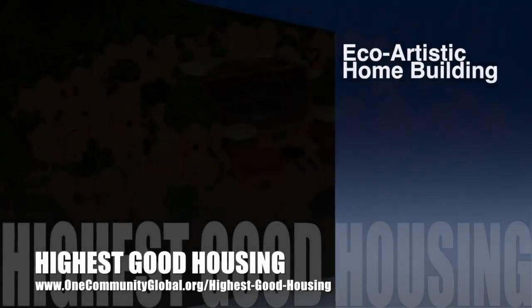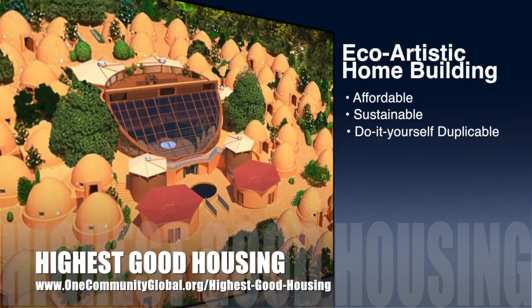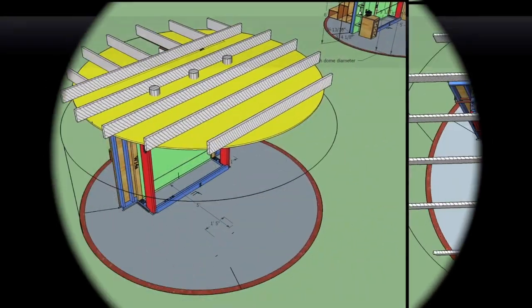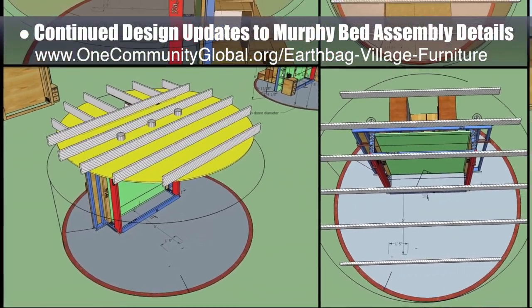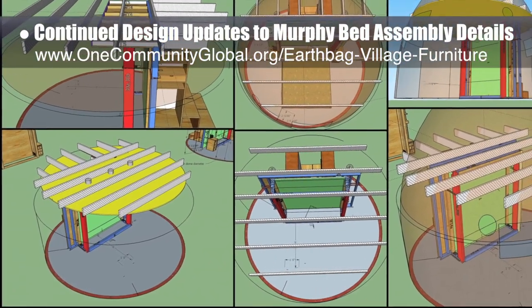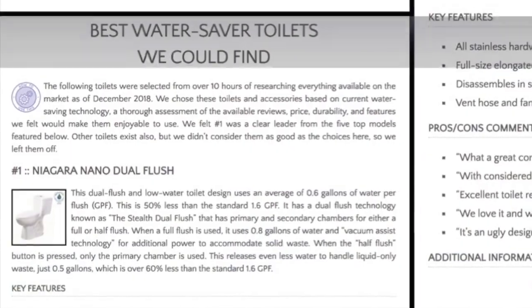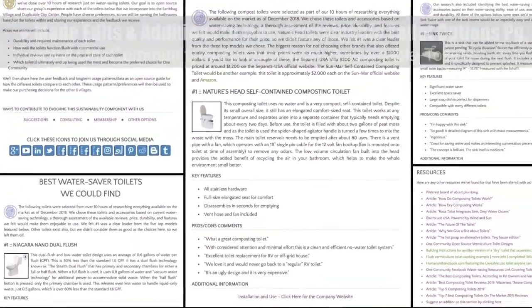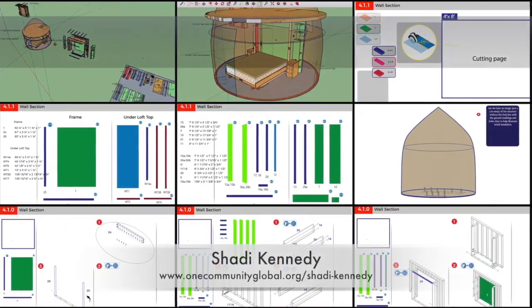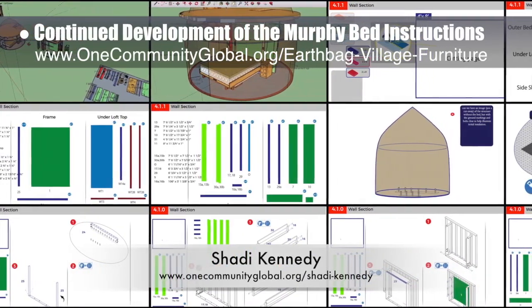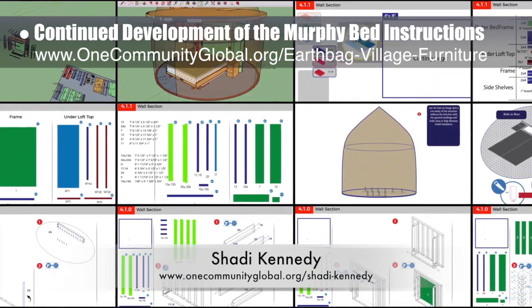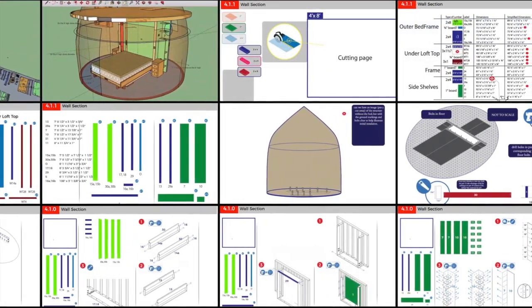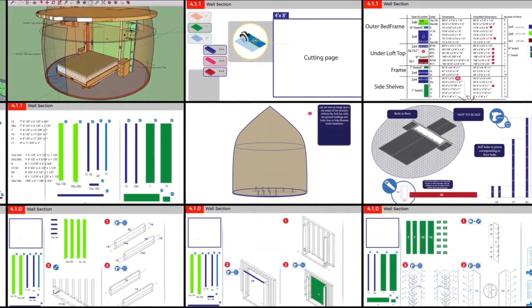One Community's approach to highest good housing is eco-artistic home building that is affordable, sustainable, do-it-yourself, duplicable, and resource and space efficient, consisting of seven different sustainably constructed village models. This week the core team continued design updates to the open source murphy bed furniture assembly details — checking measurements, creating two different layouts for the loft joists, and working on further improving the assembly step order. Shoddy Kennedy, artist and graphic designer, also completed his 36th week leading development of the murphy bed instructions, creating new parts files from the updated 3D parts list, double-checking all measurements, outlining the new plan for descriptive and illustrative renders, and creating new instructional diagrams for the frame section based on the newly revised assembly method.